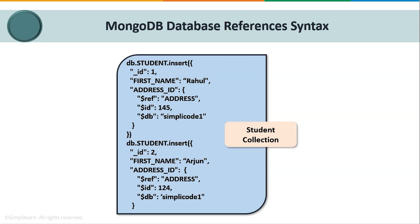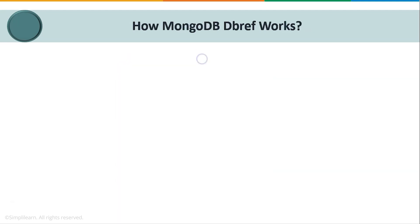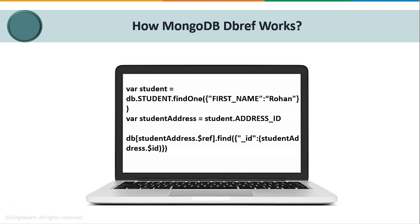In the student collection, I'm inserting a student record with ID 1 and first name Rahul. Inside the address ID field — which is the DBRef field — we are using MongoDB's reference approach to refer to the address ID from the address collection. We define three fields: $ref, $id, and the optional $db. The $ref is the collection name 'address', the $id is 1.5, and the database is 'simply_code_1'. Similarly, we insert another document referencing the address collection with ID 124 and database 'simply_code'.